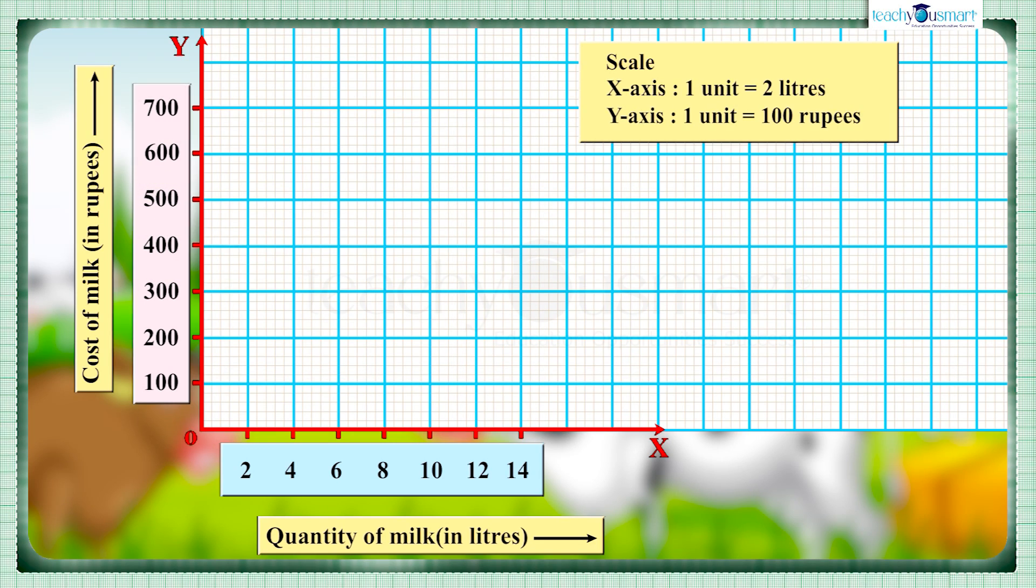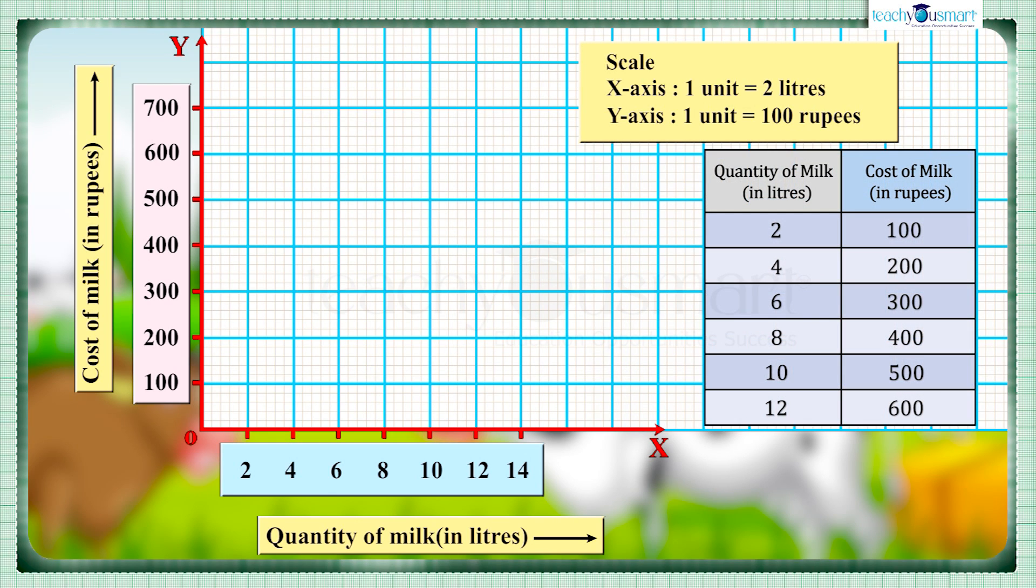Now we can plot each ordered pair as 2, 100; 4, 200; 6, 300; 8, 400; 10, 500; and 12, 600. When we join these points, we get a linear graph.